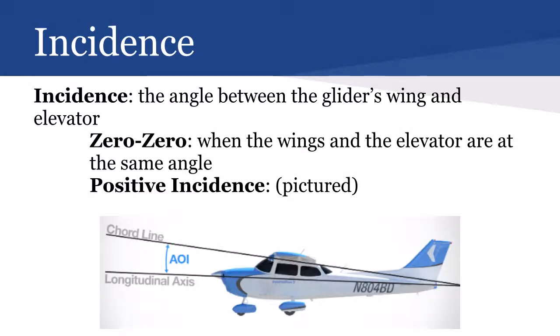Here is our incidence slide. Incidence is the angle between the glider's wing and the elevator. We know that the wing is the obvious part, and the elevator is towards the tail — that's the angle between them. Here you can see along the longitudinal axis with this picture of a jet plane, that is a straight line along the elevator, that horizontal stabilizer. This is assuming that the horizontal stabilizer and the wing are all at the same angle — that is 0-0 when the wing and elevator are at the same angle.